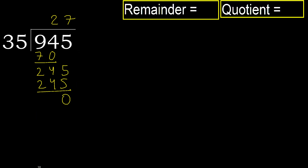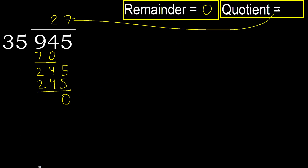There is no next number, therefore we are finished. 945 divided by 35 is 27.